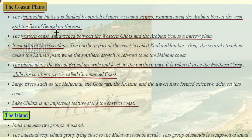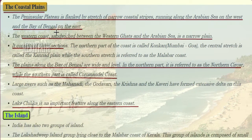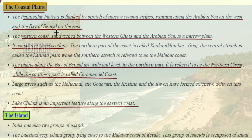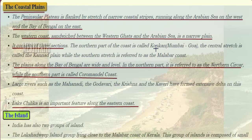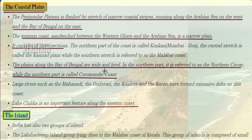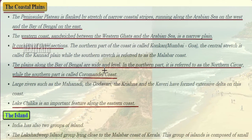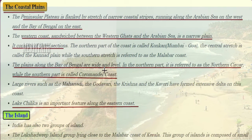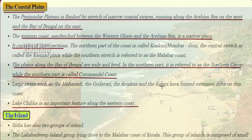The coastal plains: the peninsular plateau is flanked by a stretch of narrow coastal strip running along the Arabian Sea on the west and the Bay of Bengal on the east. The western coast is sandwiched between the Western Ghats and the Arabian Sea. It consists of three sections: the northern part known as Konkan (Mumbai–Goa region), the central stretch known as Kannad Plain, and the southern stretch referred to as the Malabar Coast. The plains along the Bay of Bengal are very wide and level — the northern part is referred to as Northern Sirkars and the southern part as the Coromandel Coast. Large rivers such as Mahanadi, Godavari, Krishna and Kaveri have formed extensive deltas on this coast.